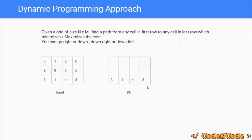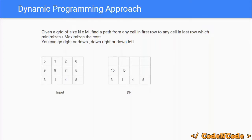With the base case set, we fill the DP table row by row from row n-1 up to row 1. For the first cell in row n-1, you can go down or down-right — no down-left exists. The cost going down is 3 and going down-right is 1, so minimum is 1. Adding the current cell cost of 9 gives 1 + 9 = 10. Similarly, the next cell also evaluates to 10.